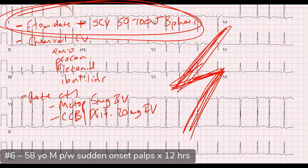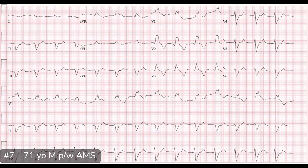Regarding anticoagulation on discharge: we used the CHA2DS2-VASc score — a scoring system you can look up on MDCalc. Guidelines recommend anticoagulation with warfarin, LMWH bridging to warfarin, apixaban, or rivaroxaban if the score is 2 or greater. This patient's score was just 1, so we decided not to anticoagulate, gave him follow-up, and told him to have that discussion with his cardiologist.